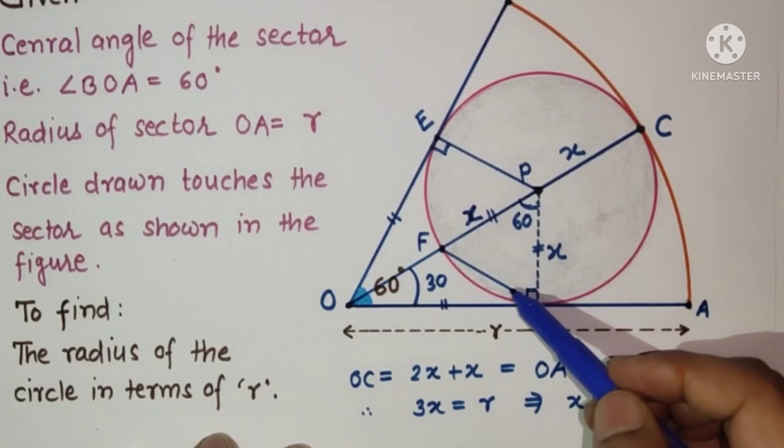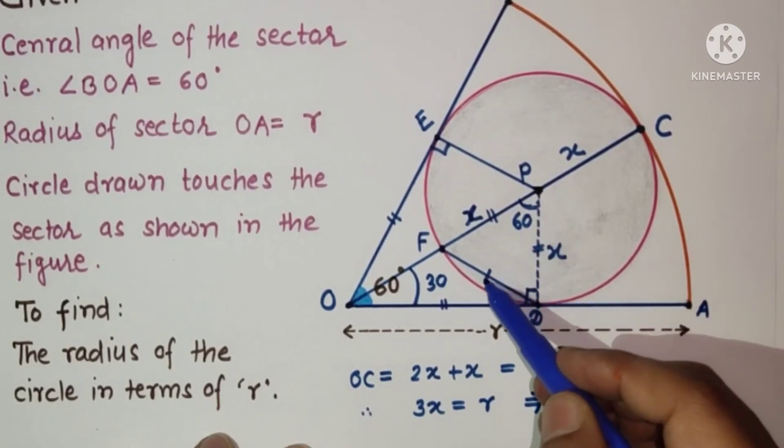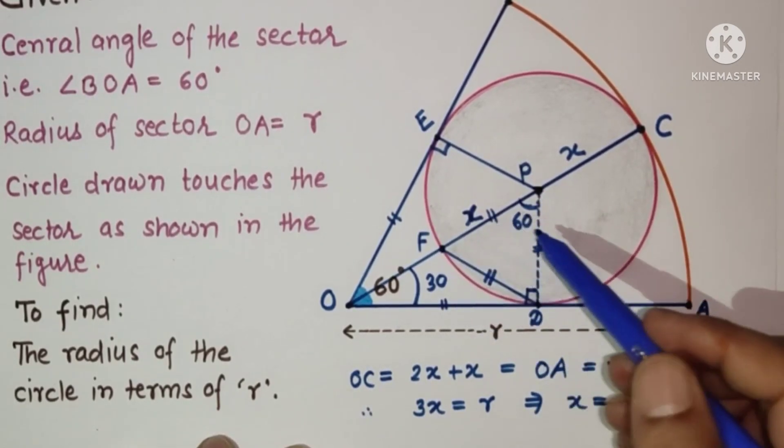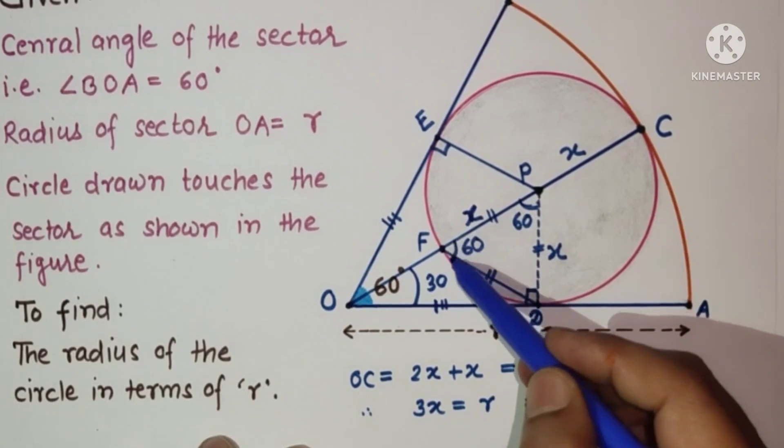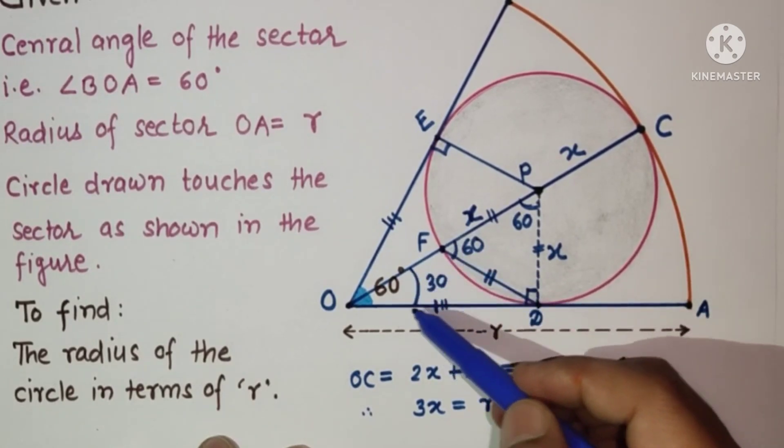This will also be 60, also be 60, so all are equal. Triangle PFD is an equilateral triangle. This is 60 degrees, this is 60, and will be equal to this 30 and this 30.